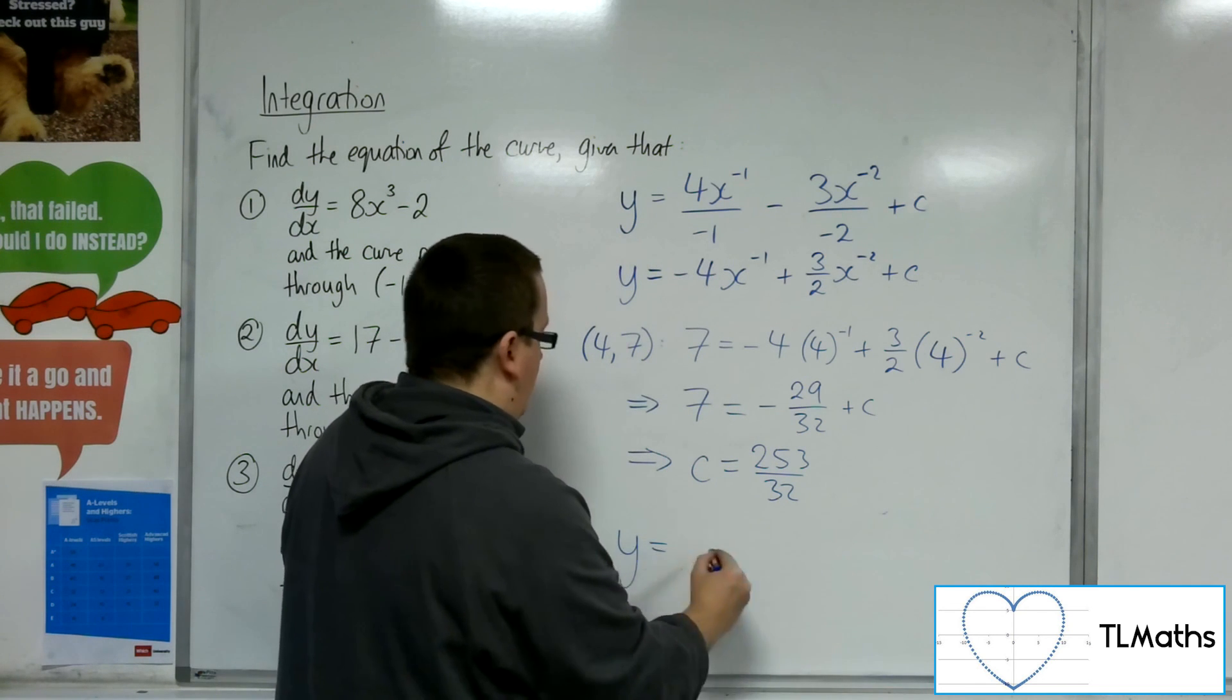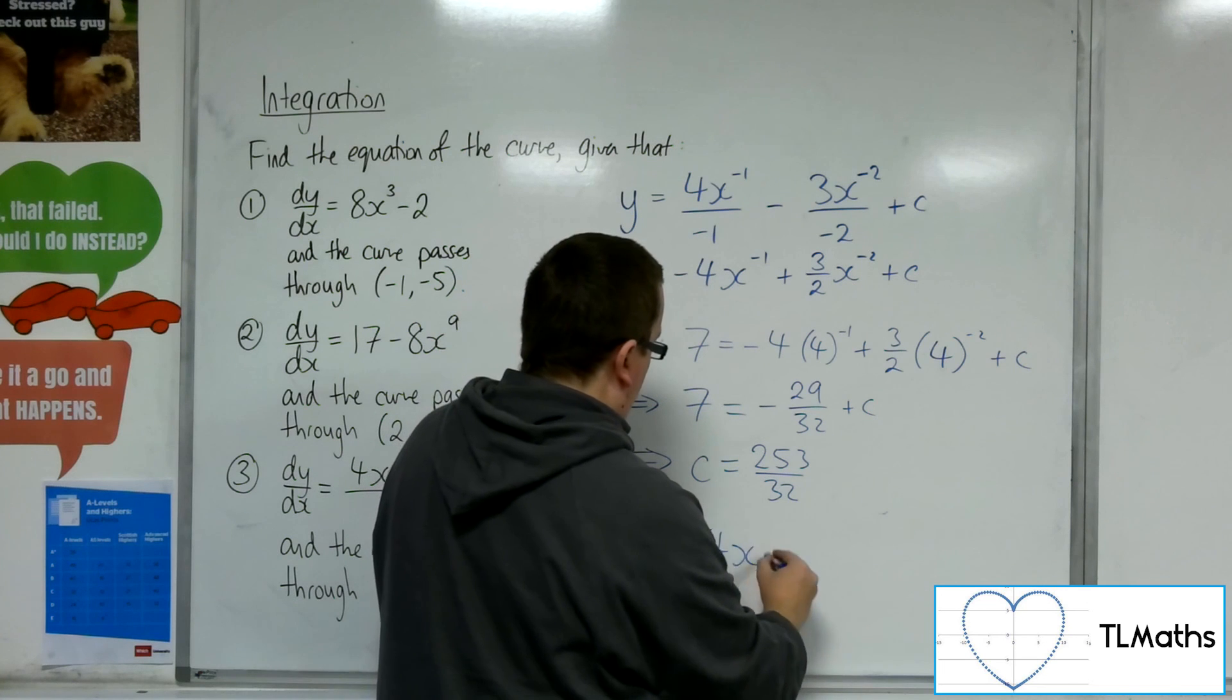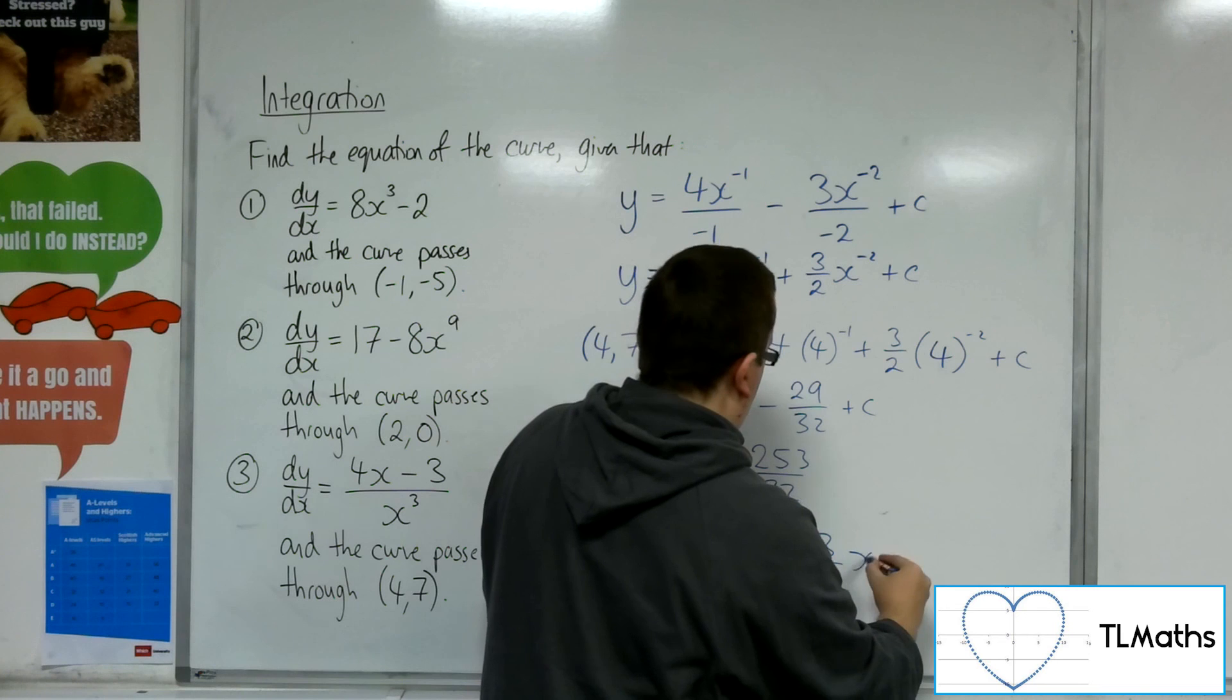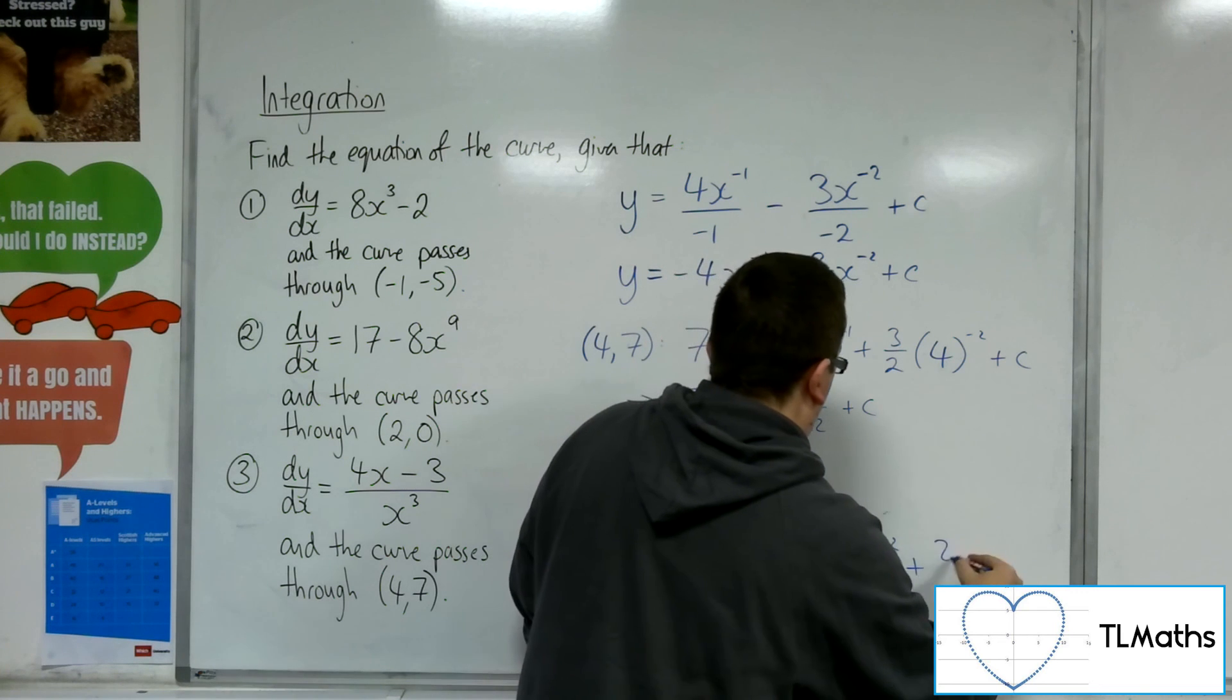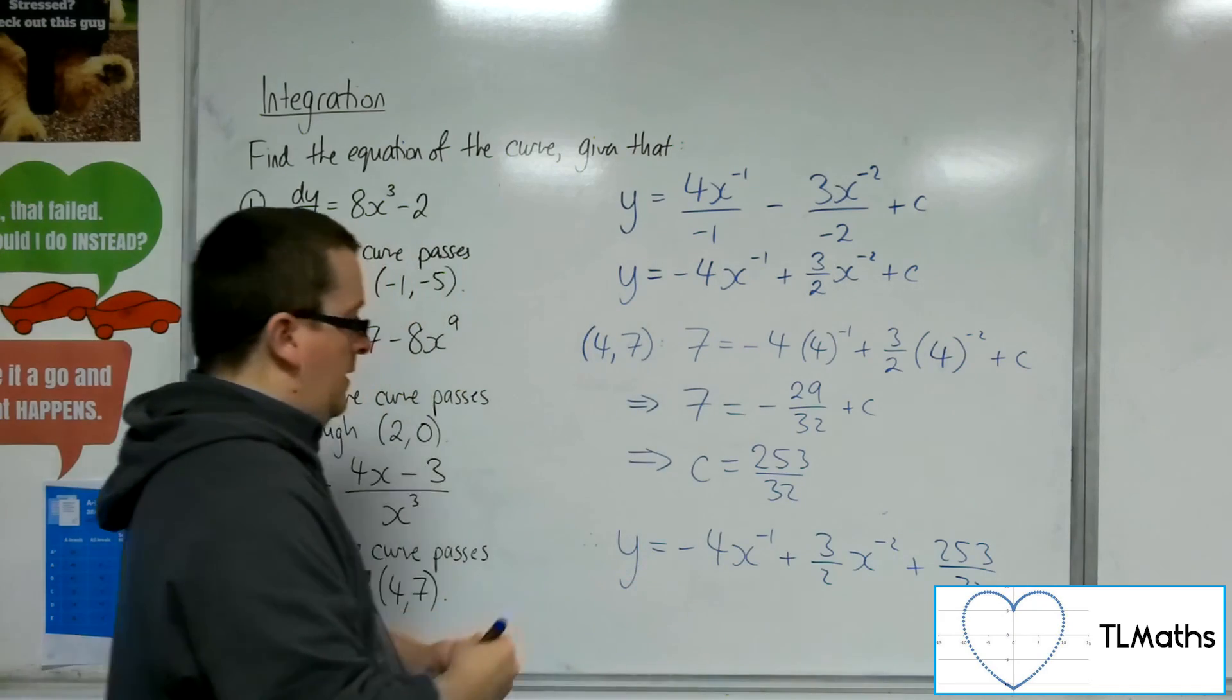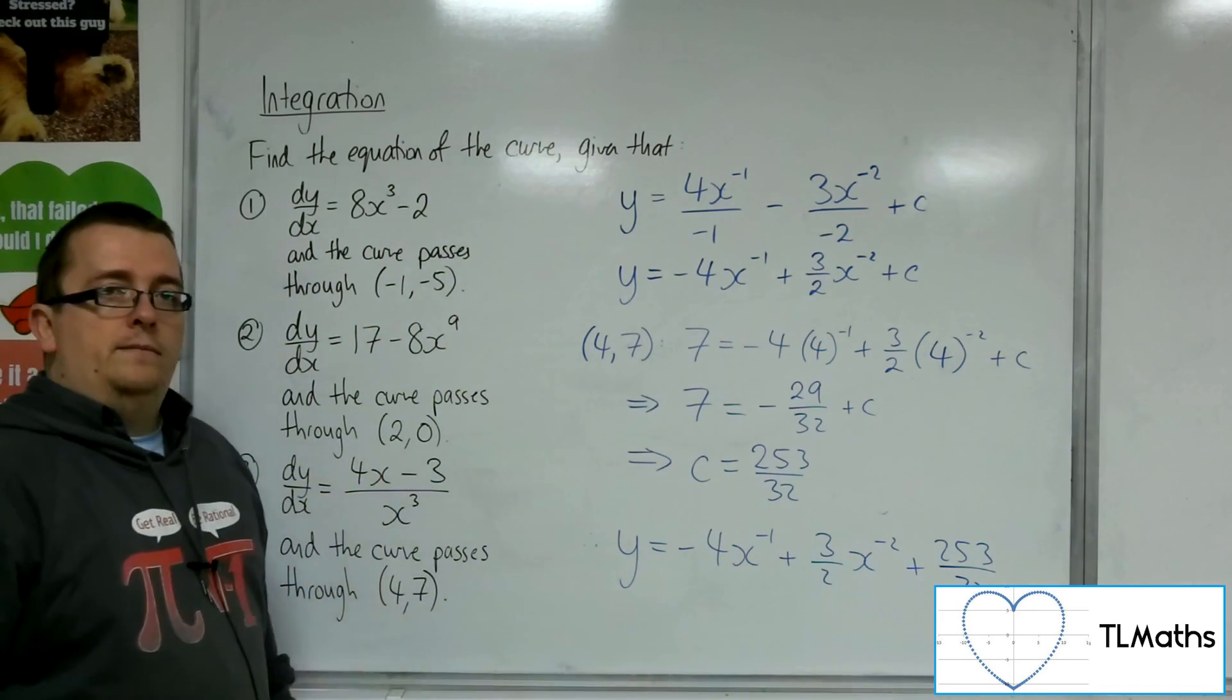So the particular solution for this is y = -4x⁻¹ + (3/2)x⁻² + 253/32. And that is the particular solution for number 3. Thank you.